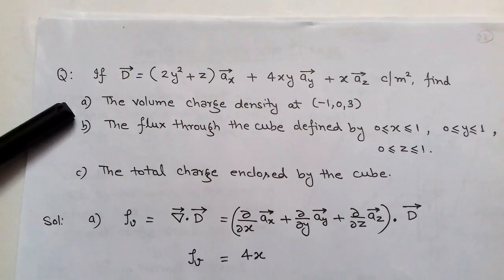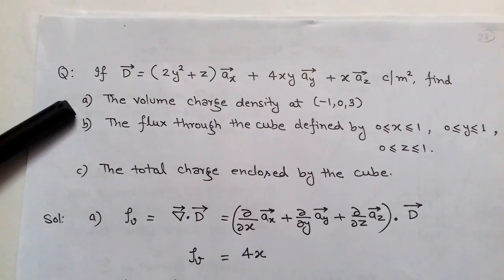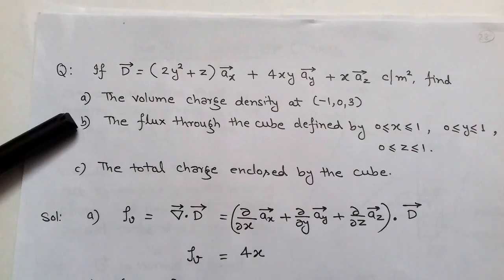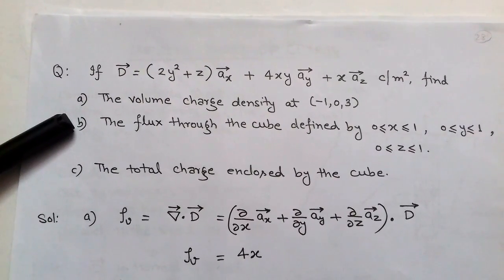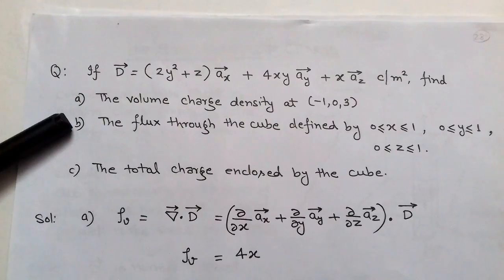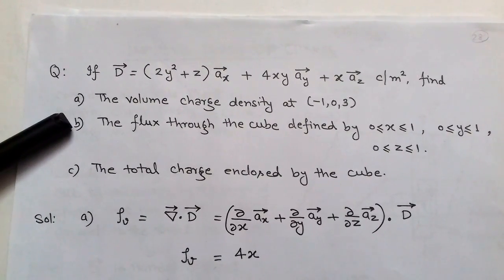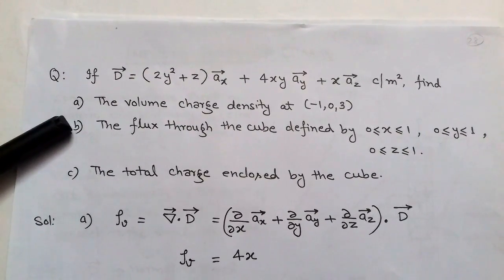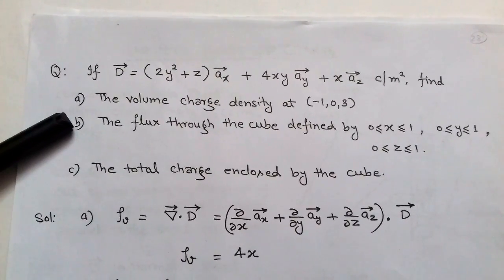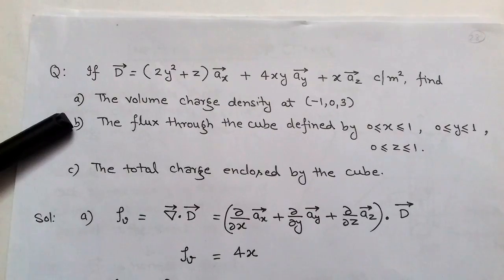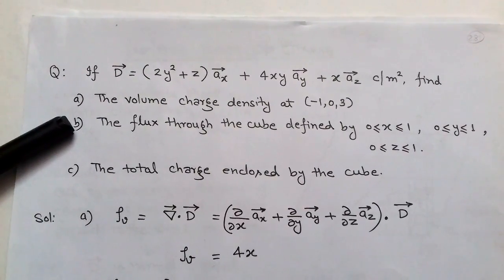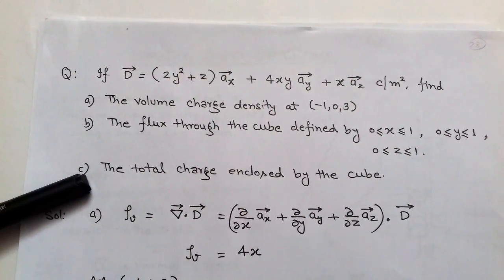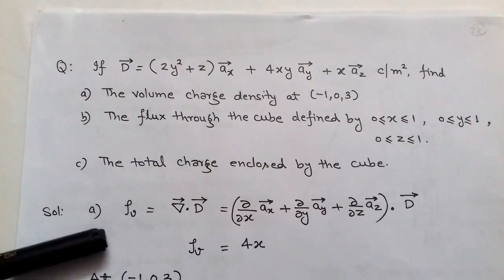We have to find: (a) the volume charge density at point (-1, 0, 3), (b) the flux through the cube defined by 0 ≤ x ≤ 1, 0 ≤ y ≤ 1, 0 ≤ z ≤ 1 — that is a unit cube — and (c) the total charge enclosed by this cube.